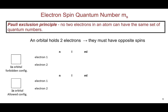The Pauli exclusion principle states that no two electrons in any atom can have the same set of quantum numbers. For example, if we try to put two electrons in a 1s orbital, the first has n=1, L=0, and mL=0. The second would have the same set — n=1, L=0, mL=0 — which is not allowed. We therefore need to define a new quantum number to differentiate between these two electrons.